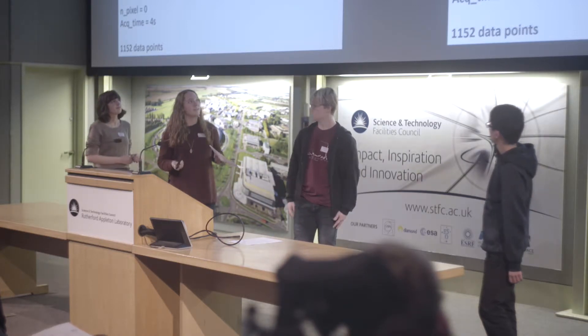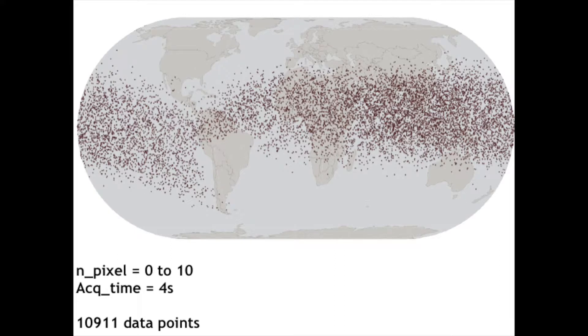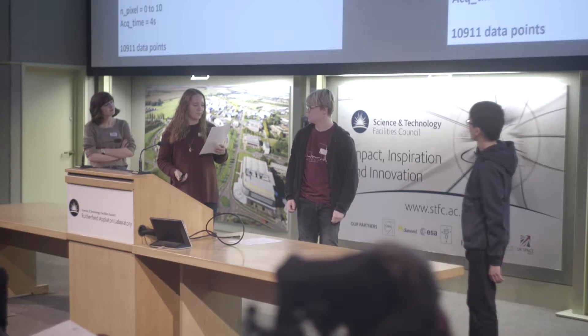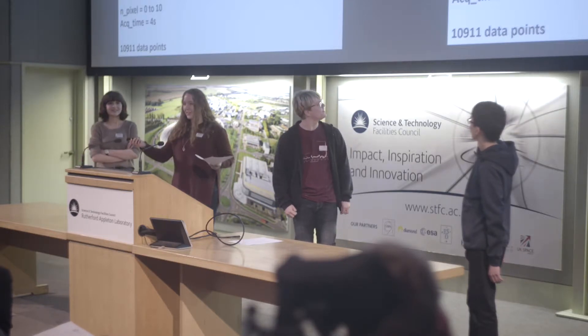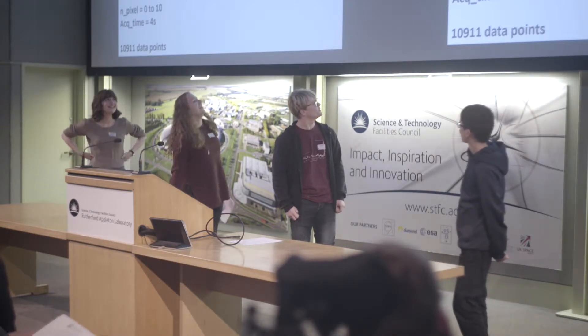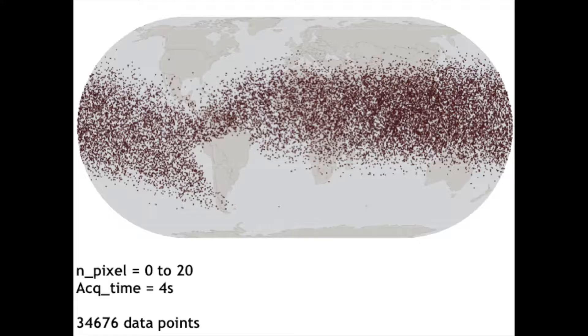We had an issue with lack of data — not a lot of definition — so we started thinking about how to include more data points. We realised that by increasing the number of pixels hit on the detector by a small amount, we could increase our data points significantly. This is from 0 to 10 pixels — there are around 65,000 data points on this map. We then increased it again to 0 to 20 pixels.